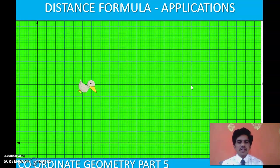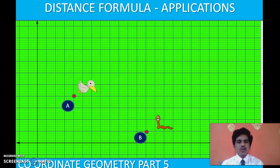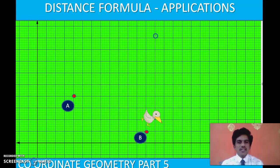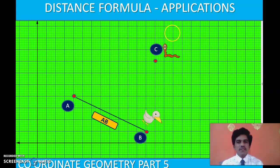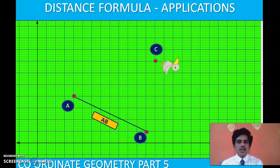Suppose you have a duck located at point A in the coordinate plane. This duck is very hungry and in search of food, and it suddenly found a worm at point B. It started travelling towards that worm and ate it. How far did the duck travel? From A to B. We can calculate this distance using the distance formula. Then it spotted another worm at point C, travelled to eat it, and we calculate the distance from B to C using the distance formula.